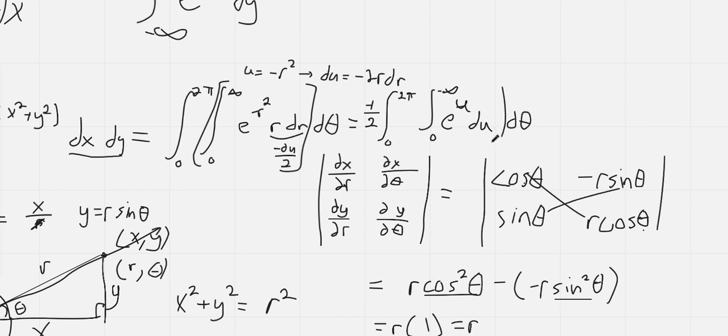So again we can just focus on this inside integral. Now this will be e to the negative infinity minus e to the 0. E to the negative infinity is the same as raising 1 over e to the infinity power which obviously just goes to 0. E to the 0 is just 1 so this whole inside integral is just negative 1 which is just a constant so we can factor that out as well.